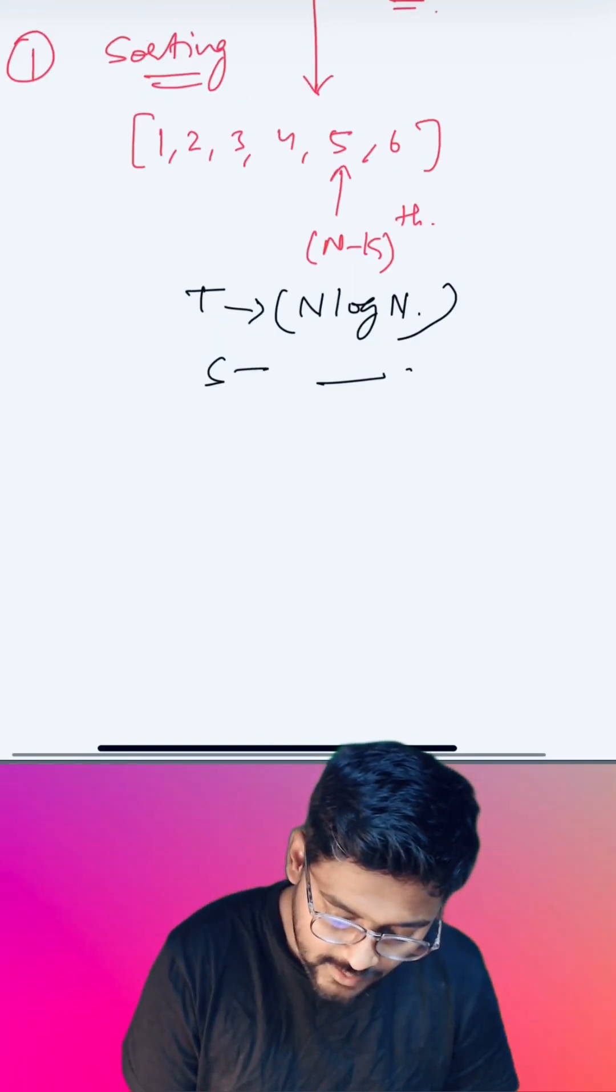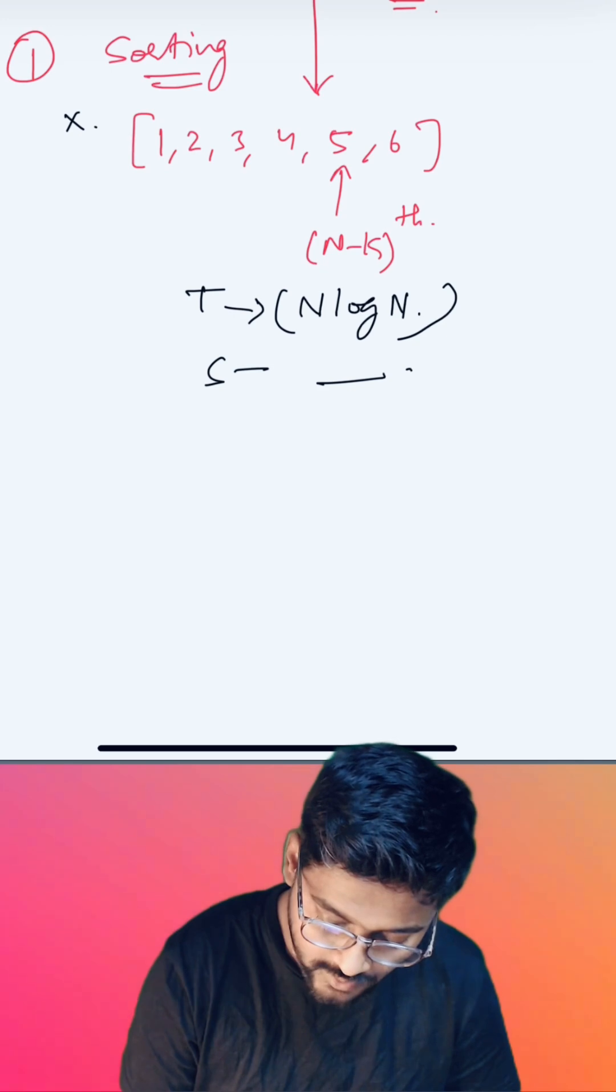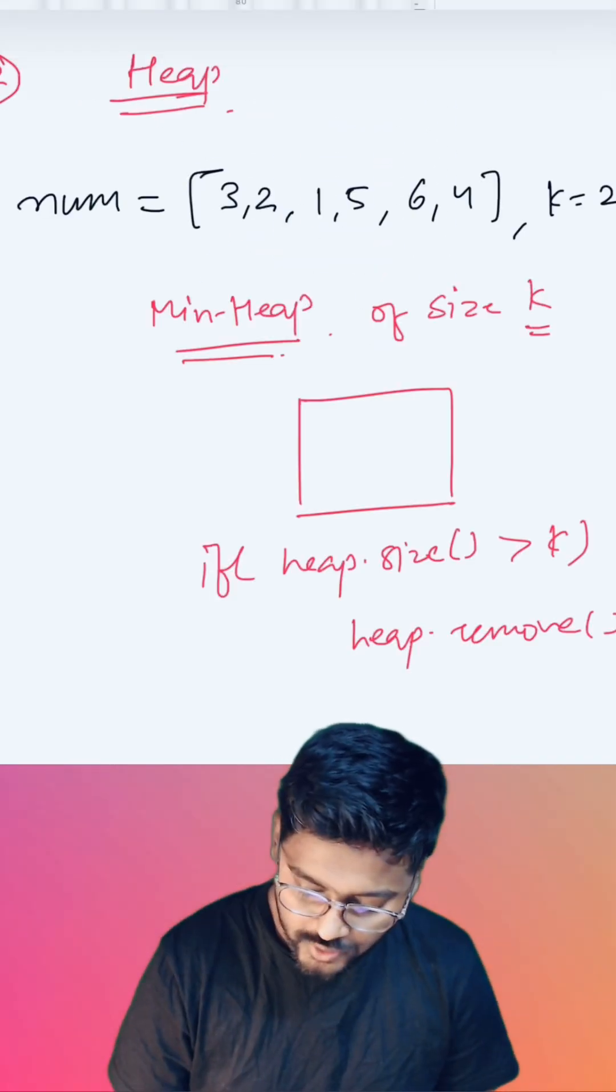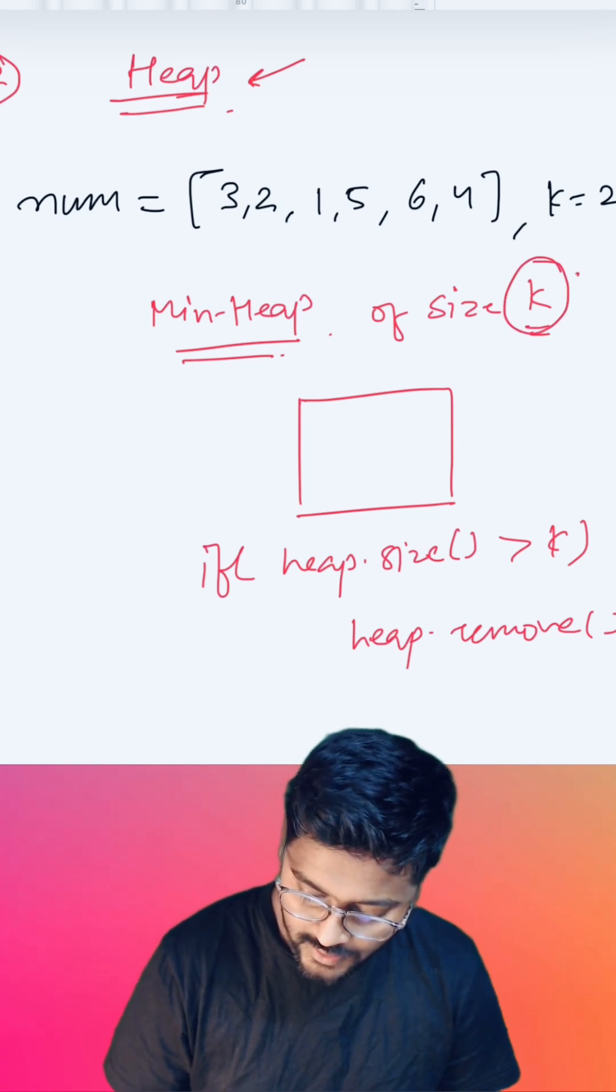But in the problem statement, it's directly mentioned that we cannot use sorting. So what is the second approach? The second approach that we can use here is heap. To be precise, min heap of size k elements.